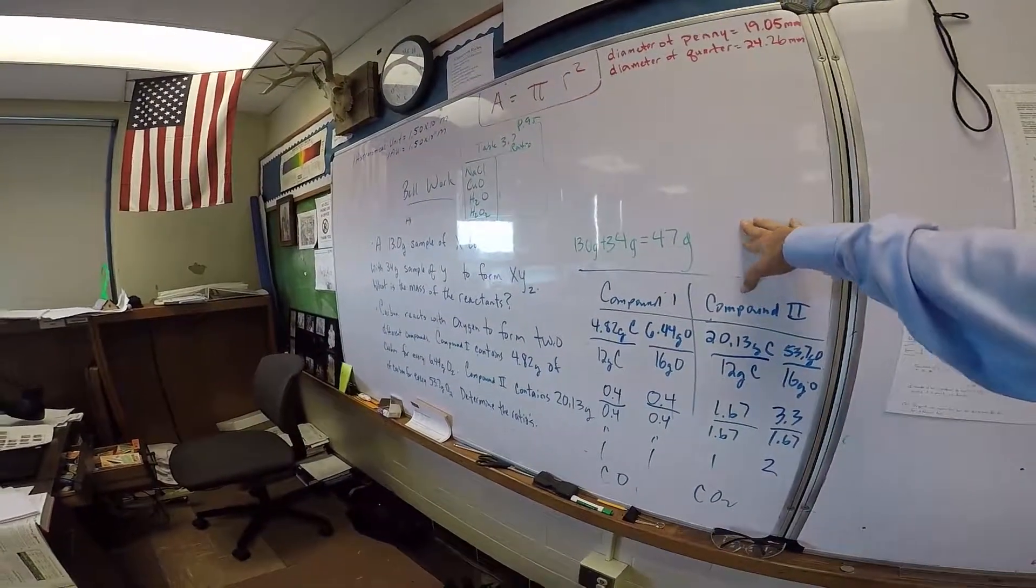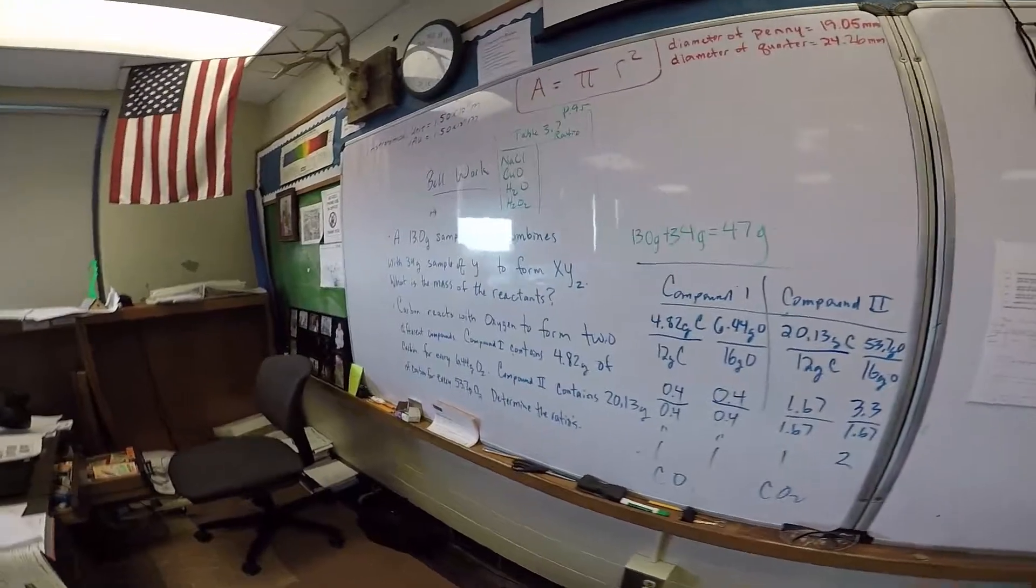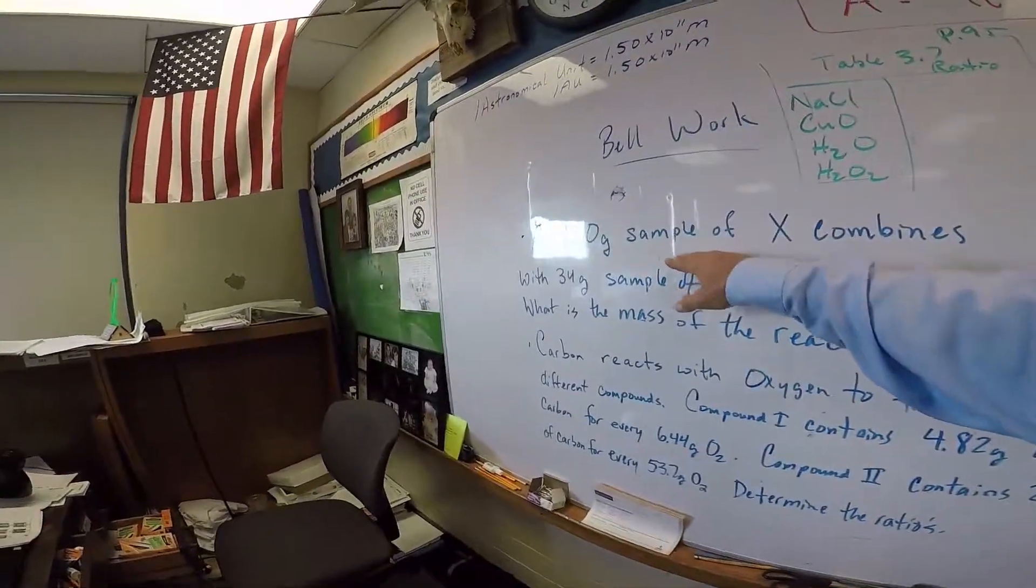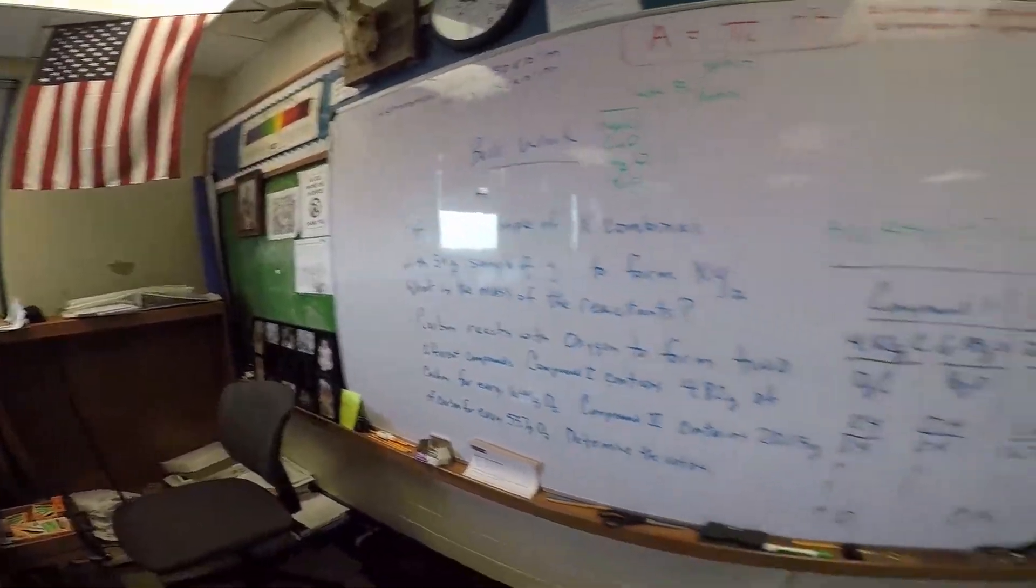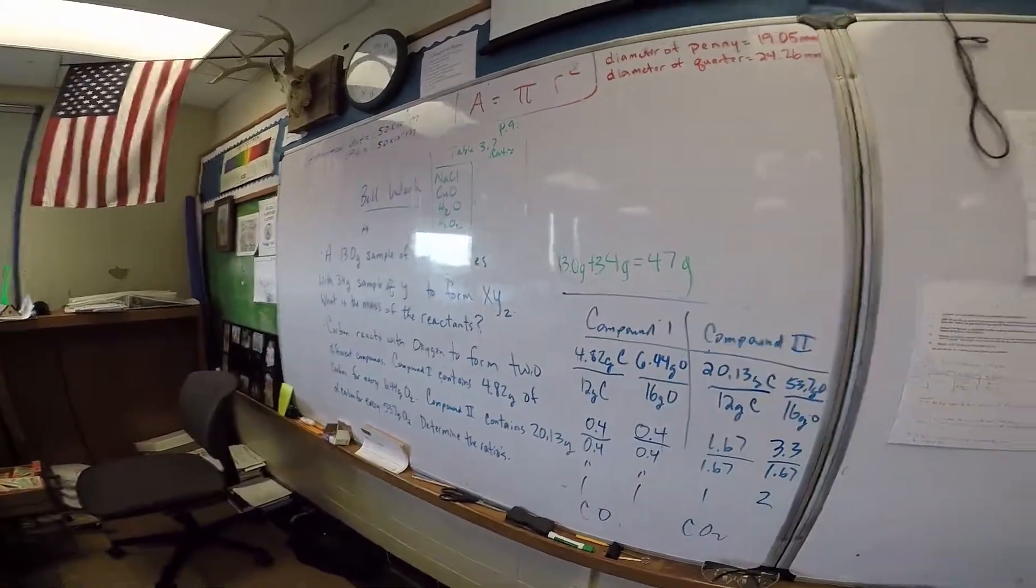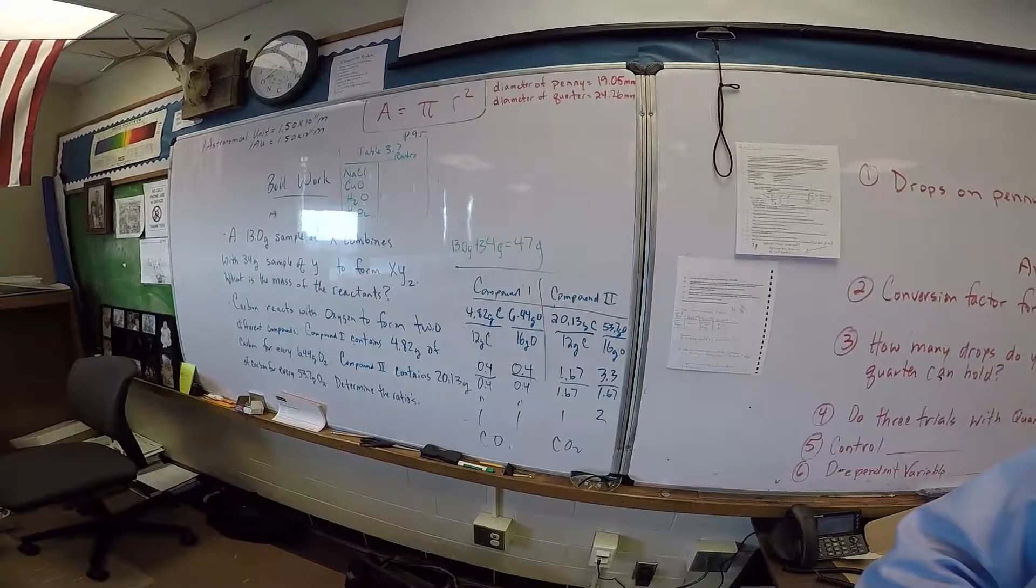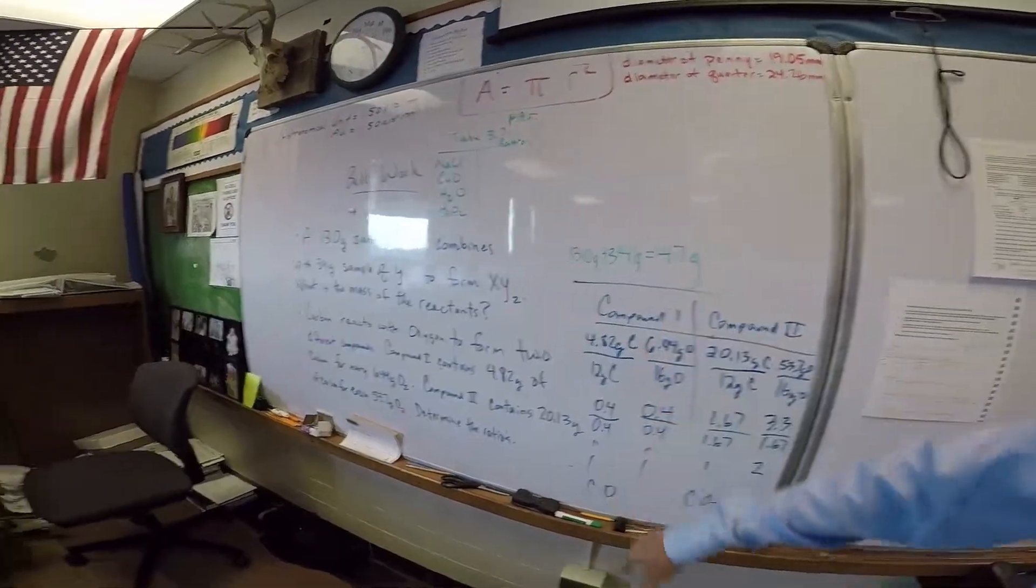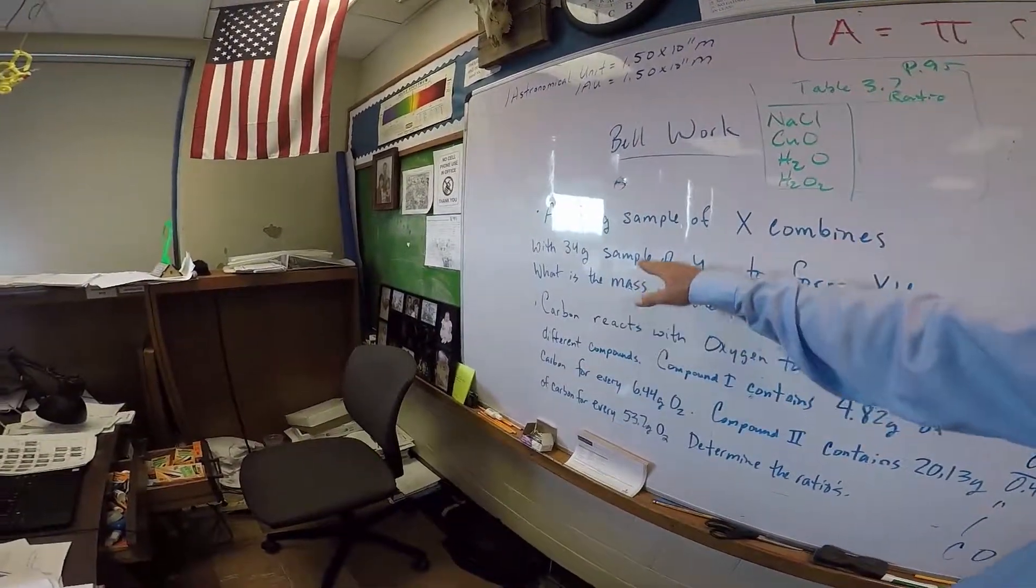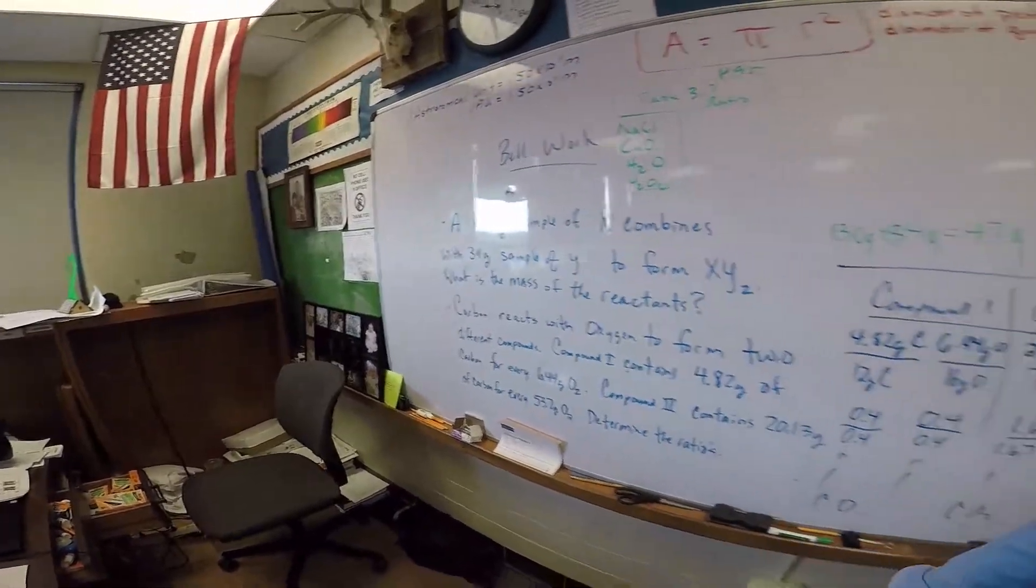Great job solving for the first one. Based on the law of conservation of mass, the mass of the reactants x plus y should equal the mass of the products. So if you have two samples, you can add them together and you have the mass of the reactants. So they're asking what is the mass of the reactants? You just add up x and y.